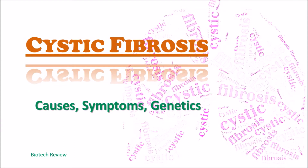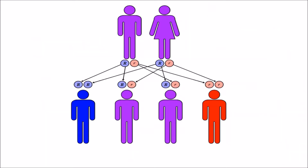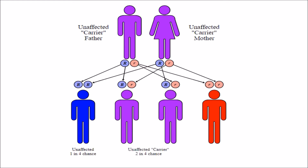Cystic fibrosis is a recessive genetic disorder. A person gets cystic fibrosis when he or she inherits two copies of a mutated gene from their parents. Characteristics of cystic fibrosis range from lung infections and digestive difficulties to salty skin.